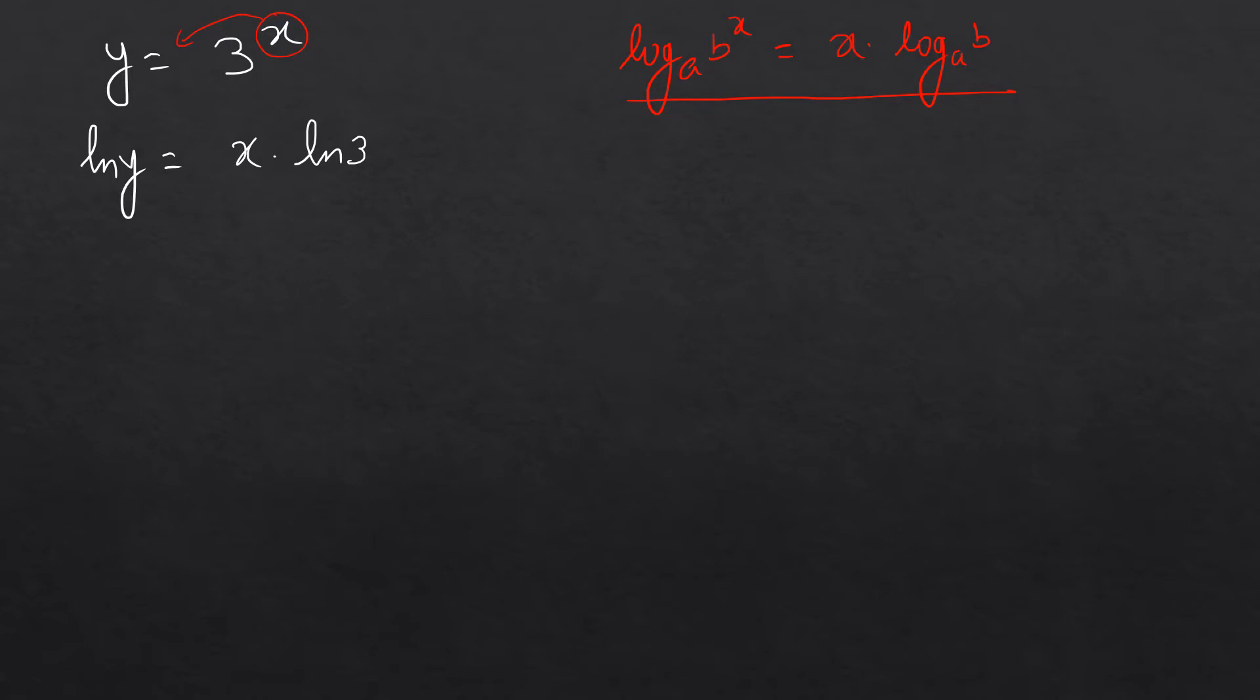Next, I'm going to take the derivative with respect to x. So we will have d over dx of ln y is equal to d over dx of x times ln 3. Now here I will use chain rule. Derivative of ln y is going to be 1 over y and then here we will have dy over dx.